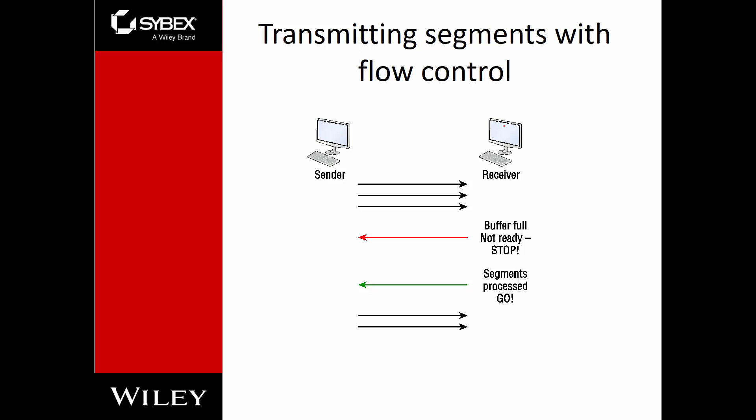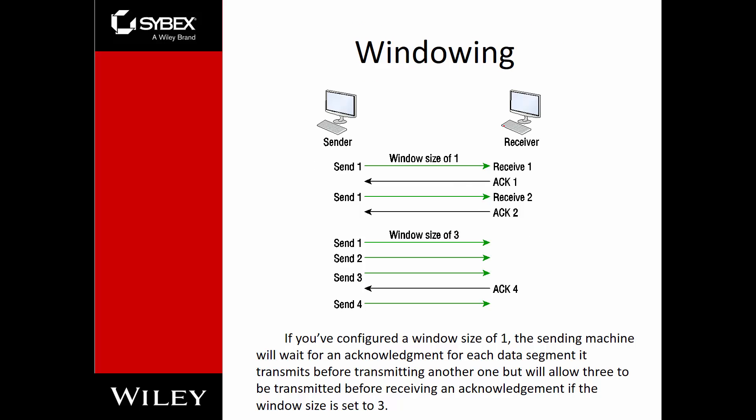What about windowing? How many bits can we send if it's connection-oriented — guaranteed delivery? How do we know if they're receiving them? We do this by setting a window size. If we have a window size of one, we send one packet, then wait for an acknowledgement before sending the next. With a window size of three, we send three packets and get back one acknowledgement for every three. If an error occurs in one of those packets, we have to resend all three.